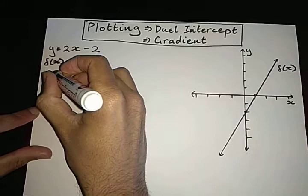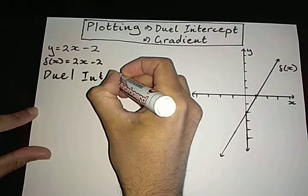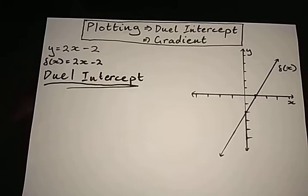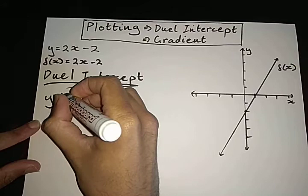So let's go ahead and actually do the dual intercept method, which is probably my favorite method to plotting a straight line graph. It's very easy, very quick, very practical. And the dual intercept method requires you to find two specific points. And those points are going to be your y and x intercepts. Remember, I said you can find any random points, but the y and x are your most important.